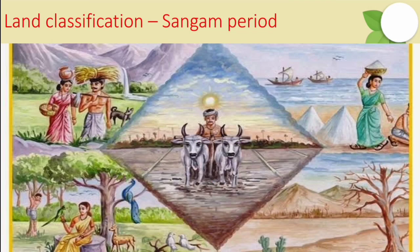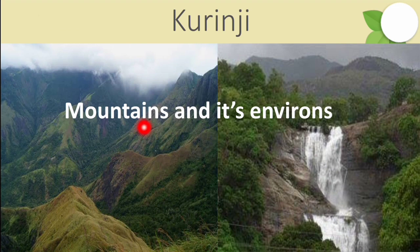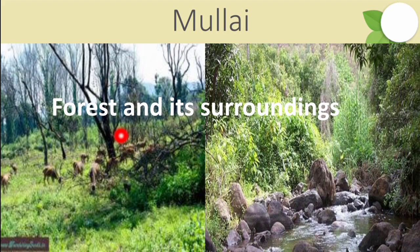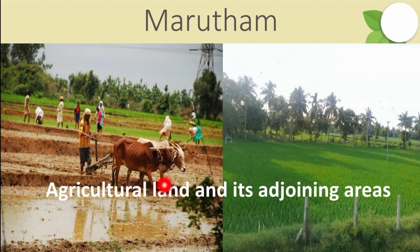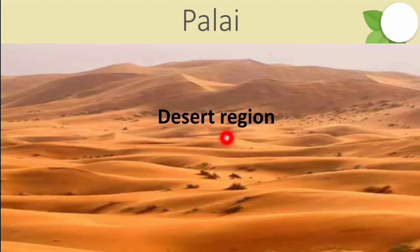During the Sangam period, land was classified into five types: Kurinji means mountains and its environs; Mullai means forest and its surroundings; Marudam means agricultural land and its adjoining areas; Neithal means sea and its environs; and Palai means desert region.